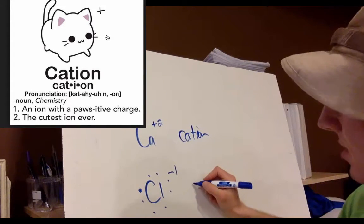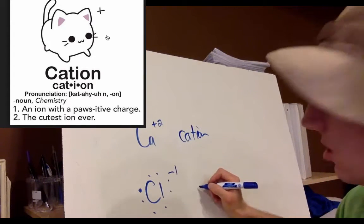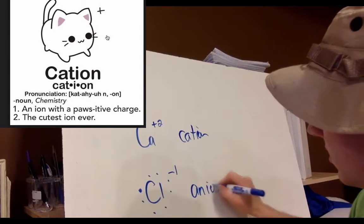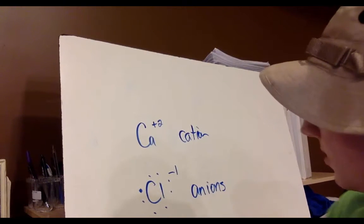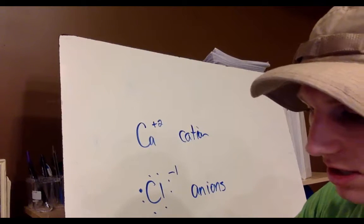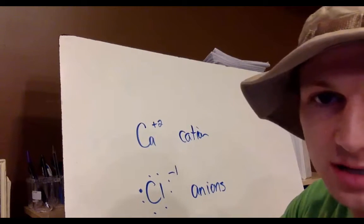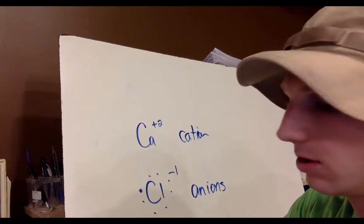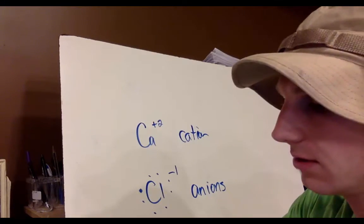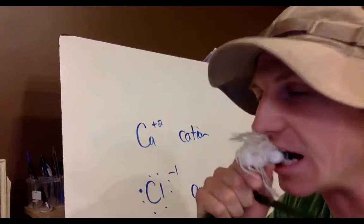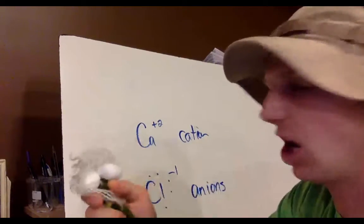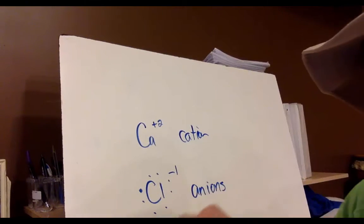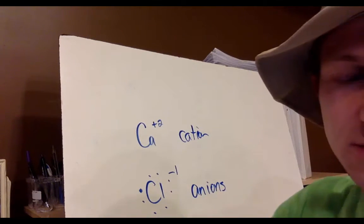Negatively charged ions are called anions. If it gains electrons, it gets a negative charge and it's called an anion. A memory trick: eating onions is a gross and negative experience — so anions have a negative charge.